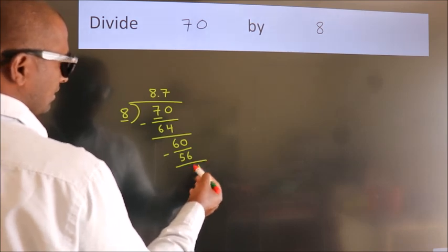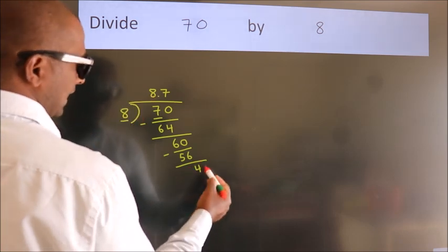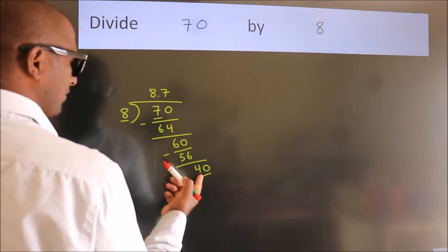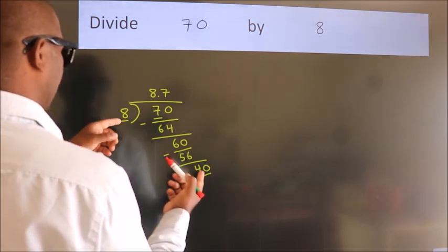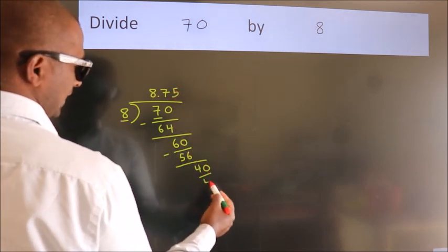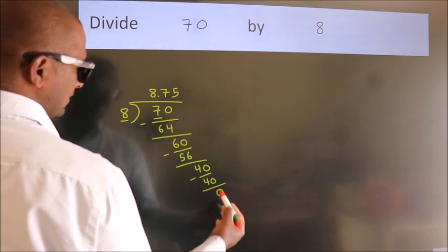After this, we already have the decimal. So directly take zero. So 40. When do we get 40 in the 8 table? 8 times 5 equals 40. Now we subtract. We get 0.